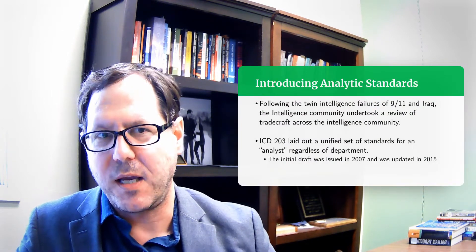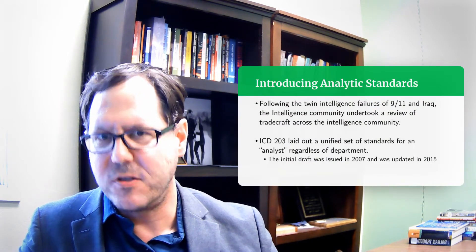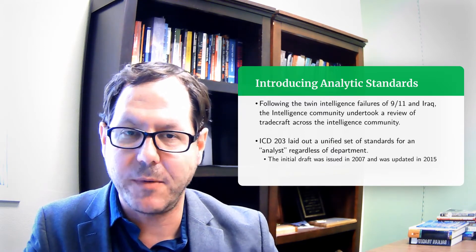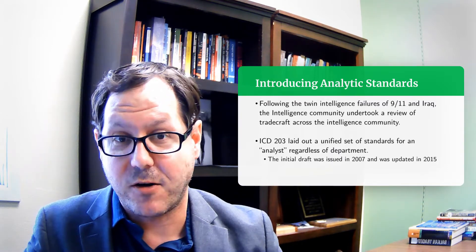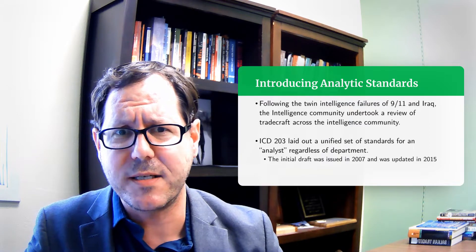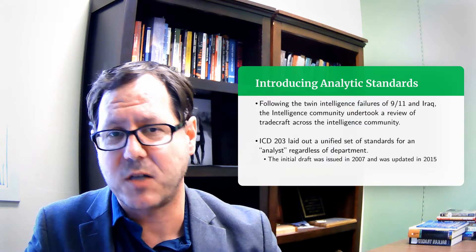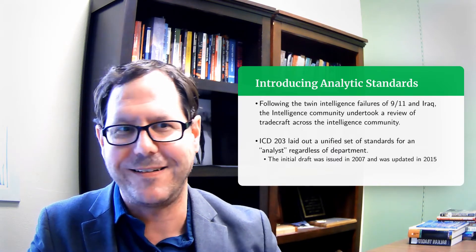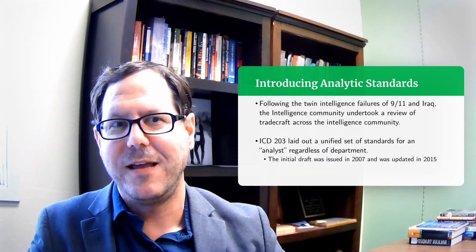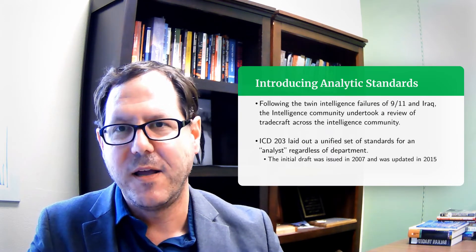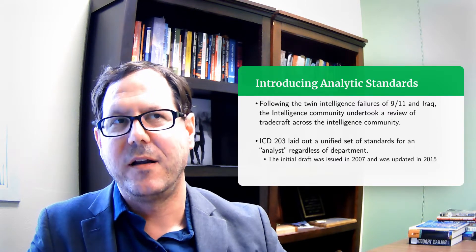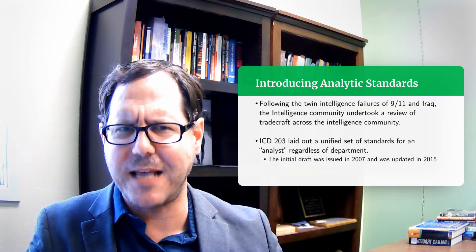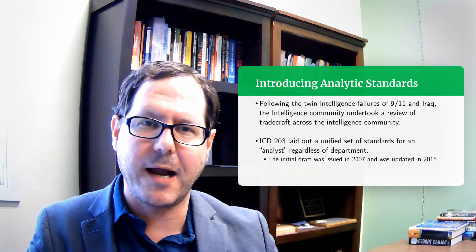ICD-203 was drafted in the wake of two intelligence failures that were fairly major and prompted some major soul searching by the intelligence community. The first was the failure to anticipate the terrorist attacks of September 11th. The second was the assessment that Iraq had weapons of mass destruction when in fact it did not. Because of those failures, the intelligence community was tasked with doing an overview of tradecraft and how analysts work, and the Office of the Director of National Intelligence created this unified set of standards for analysts that would cut across the entire intelligence community.